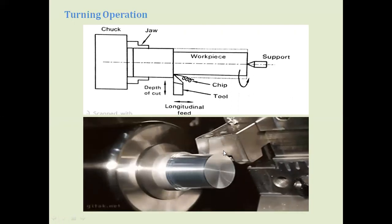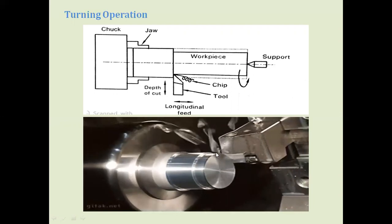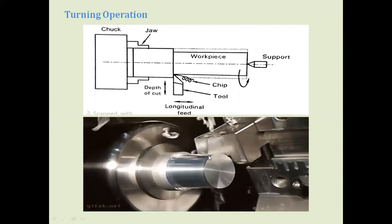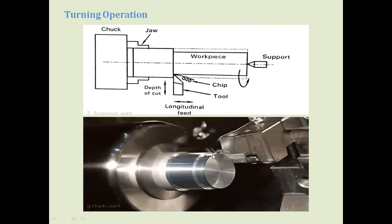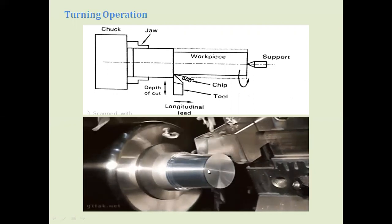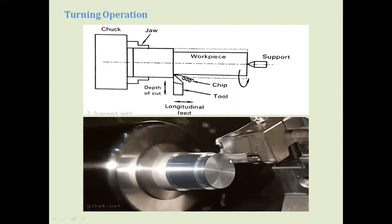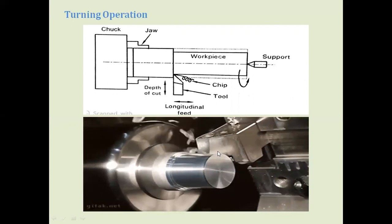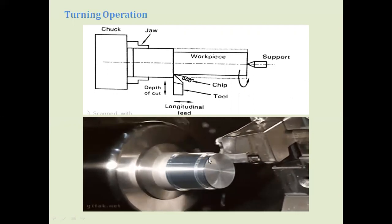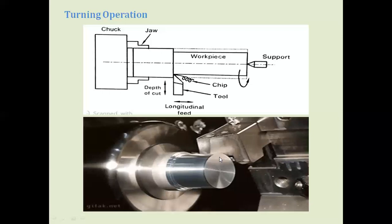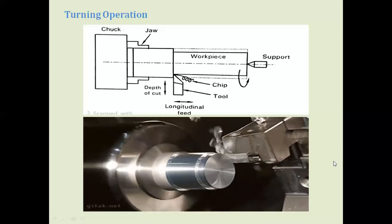You can see the cutting tool moving from one end to the other; the metal is being removed in the form of chips and the diameter is being reduced. The cutting tool moves parallel to the axis of the revolving workpiece — this is why we call it a turning operation.